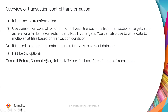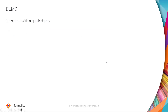Commit after means insert the records and then commit later. Rollback after means insert the records and if you want to rollback after a certain number of records, use rollback after. Continue transaction means don't change the transaction — just continue it. In this example we are going to use commit before and continue transaction.